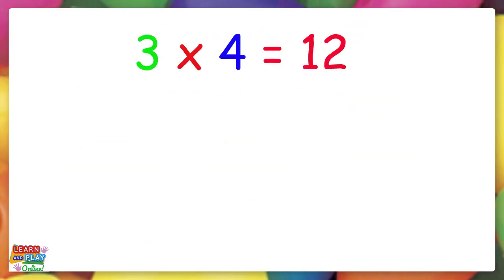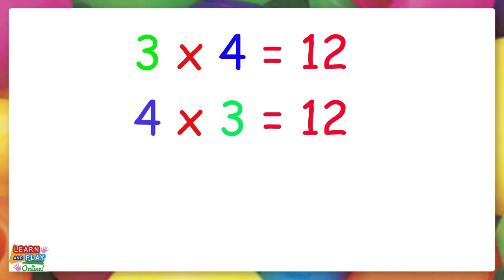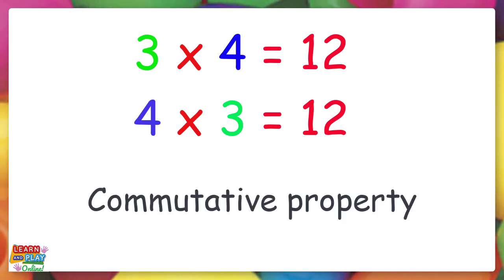As you can see, 3 times 4 equals 12, and 4 times 3 also equals 12. This is called commutative property, which means that we will get the same answer even if we swap the numbers over.